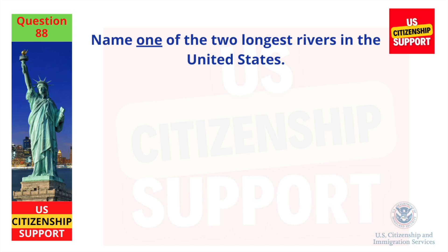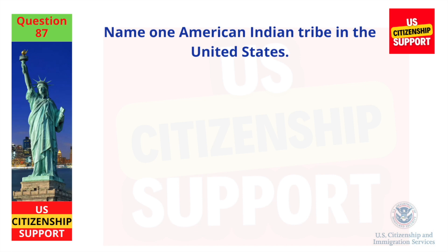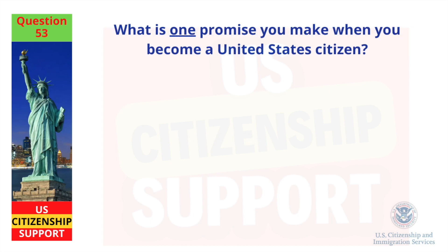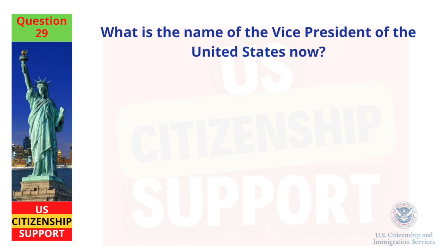Name one of the two longest rivers in the United States. Missouri River. Name one American Indian tribe in the United States. Cherokee. What is one promise you make when you become a United States citizen? Obey the laws of the United States. What is the name of the Vice President of the United States now? Kamala Harris.